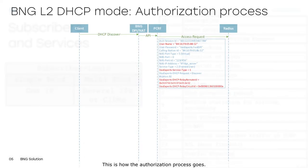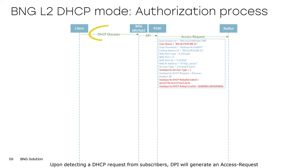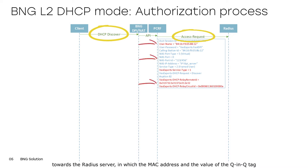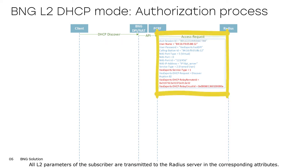This is how the authorization process goes. Upon detecting a DHCP request from subscribers, DPI will generate an access request towards the RADIUS server, in which the MAC address and the value of the Q-in-Q tag can be used as the username. All L2 parameters of the subscriber are transmitted to the RADIUS server in the corresponding attributes.